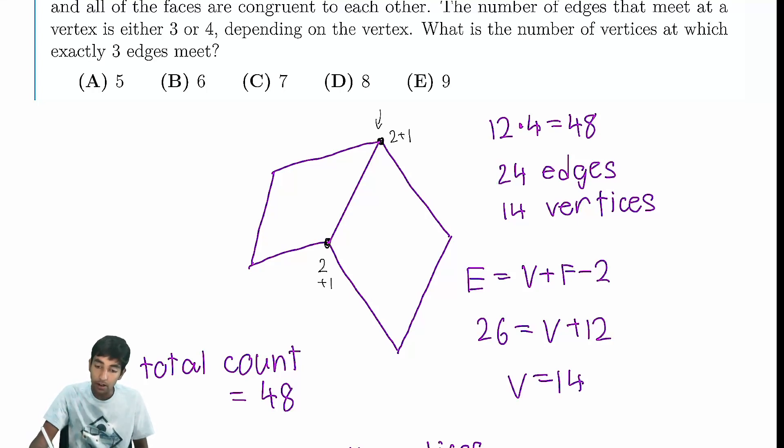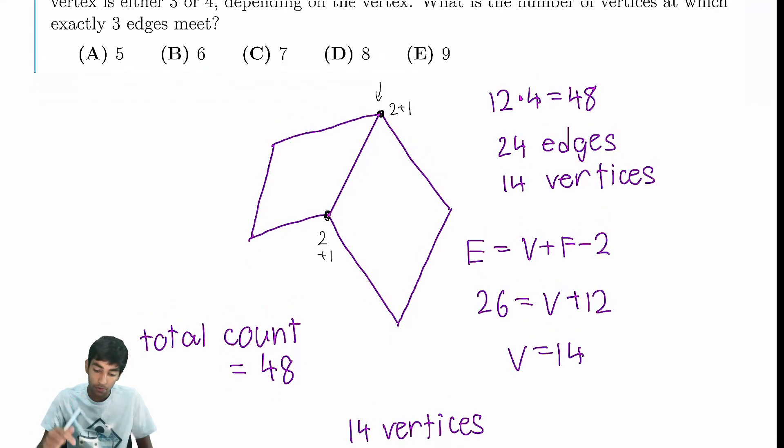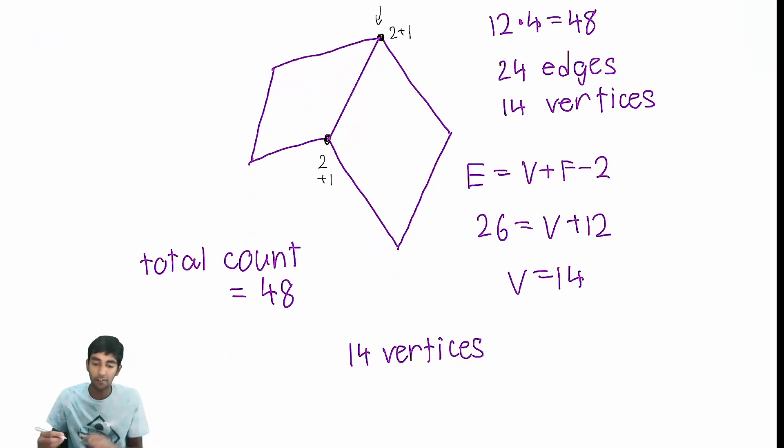But the total count is distributed amongst 14 vertices. Now we're given that the number of edges that meet at a vertex is 3 or 4. At each vertex we have 3 or 4. This is like the chicken and rabbit type questions, standard stuff. For each vertex, imagine if they all had 3 edges extruding from them. Then we would have only 42, our total count would be only 42.